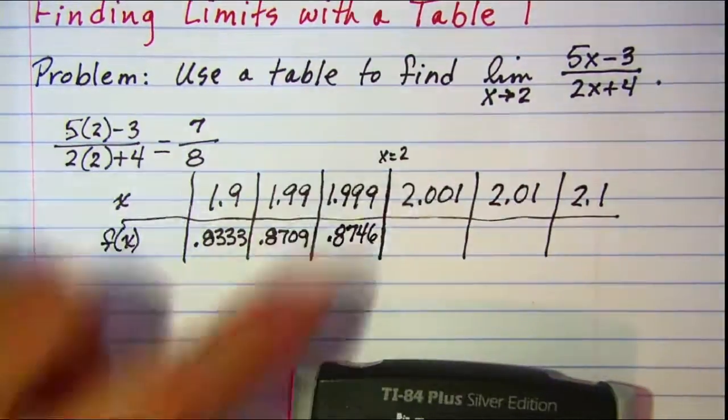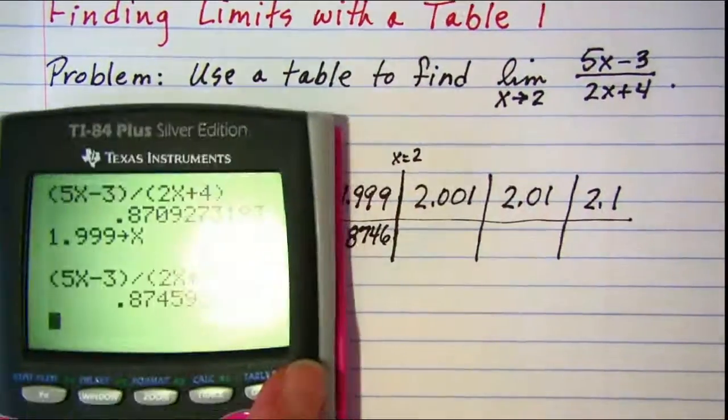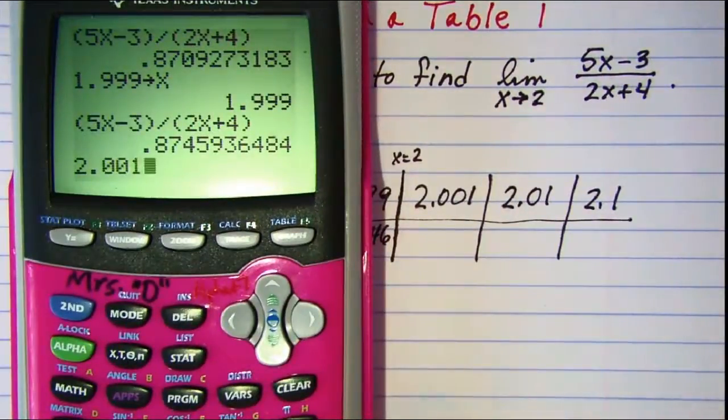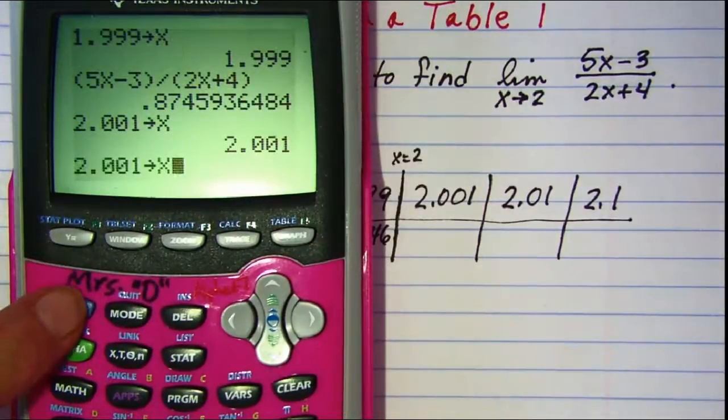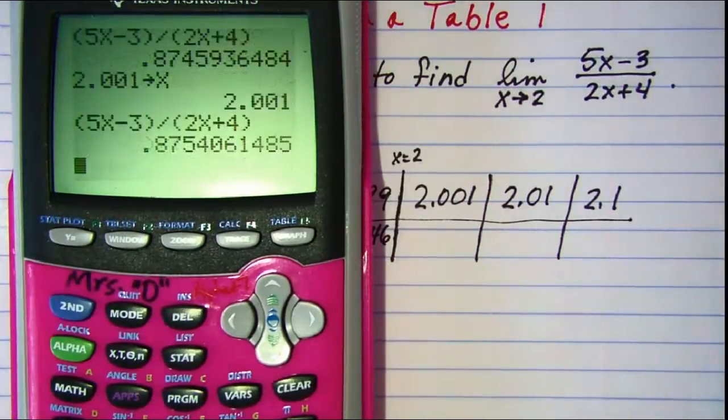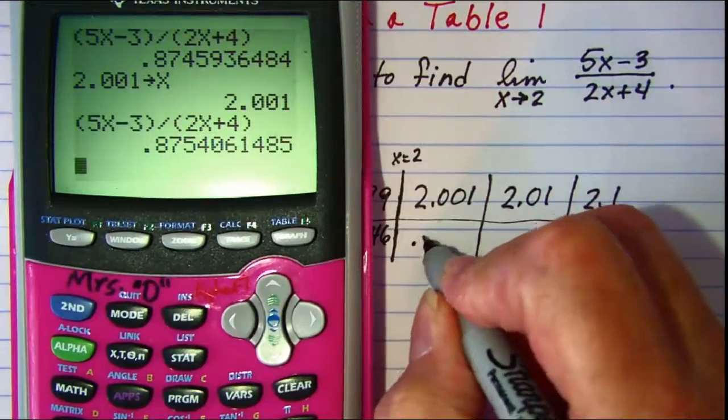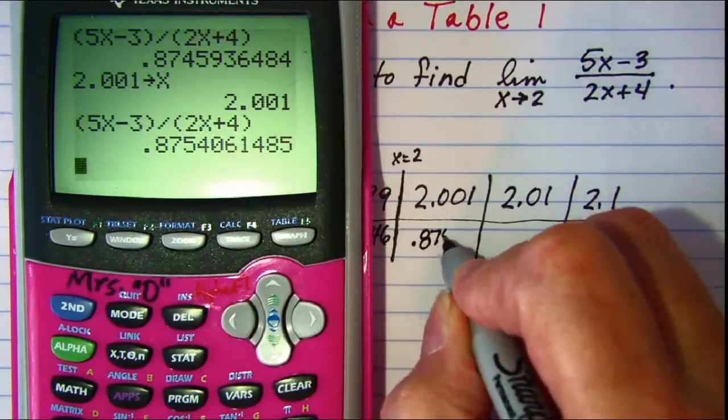Now let's do 2.001 store x, 2nd enter, 2nd enter and I have 0.8754.